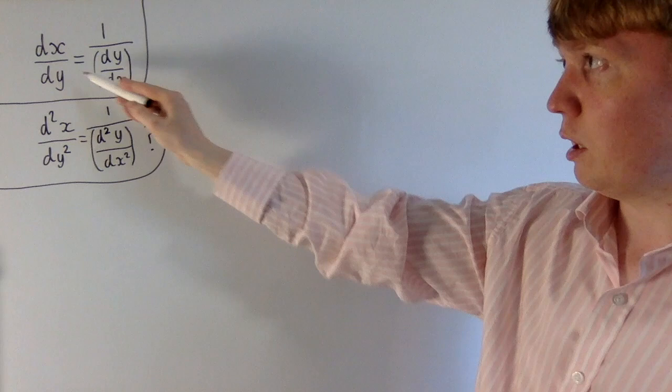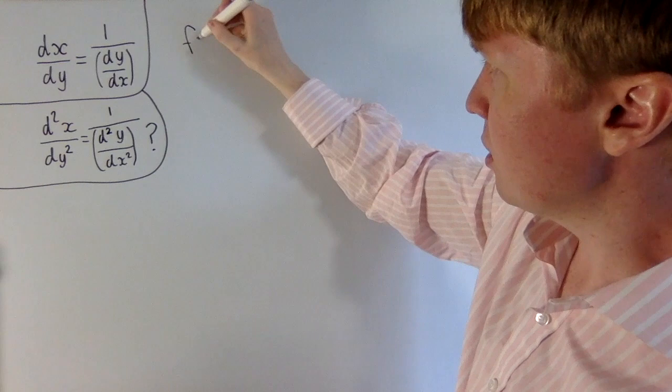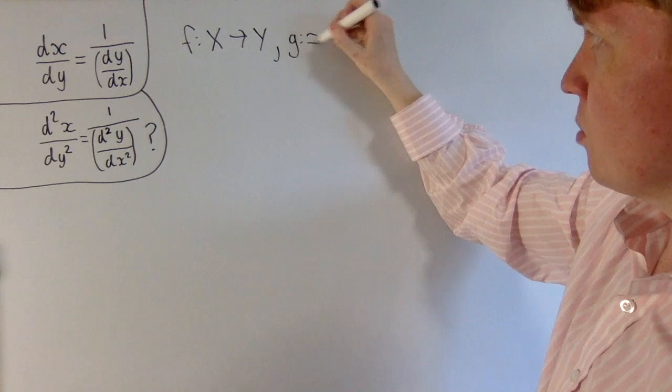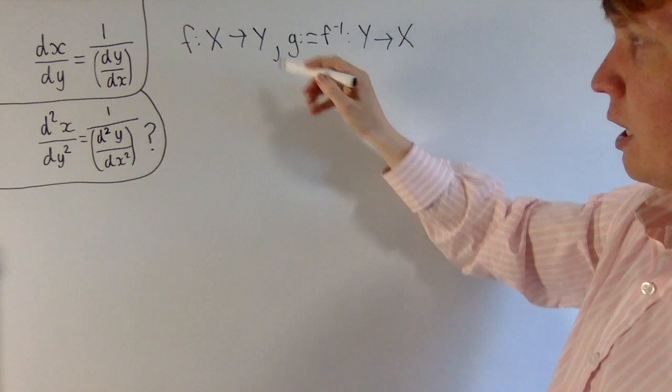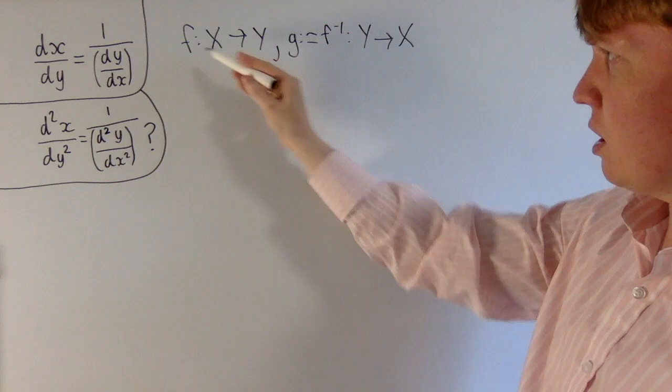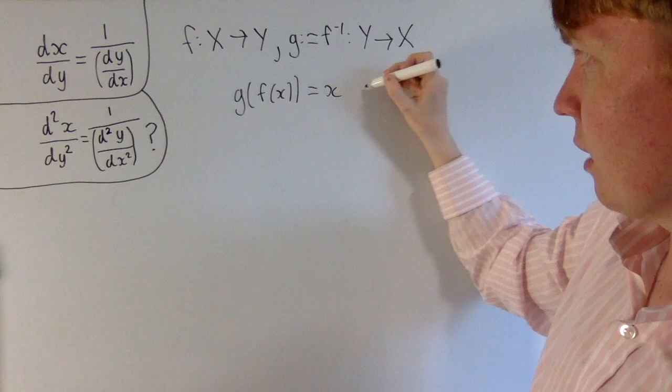Let's imagine we've got some nice differentiable invertible function f mapping from x to y. We'll define its inverse to be g mapping back from y into x, where capital X and capital Y are just some suitable subsets of the reals. Since g is the inverse of f, we can always write g(f(x)) = x for all x in our set X.